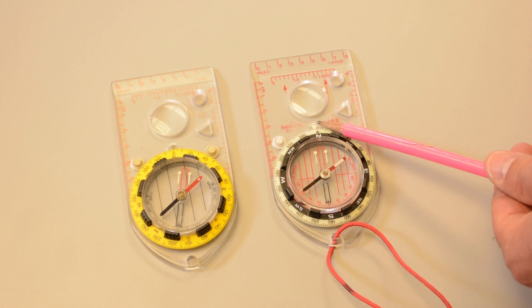Notice if the dial is rotated to north, the orienteering arrow or the shed is exactly lined up with this small triangular red bearing mark, so this compass is not adjusted for declination.